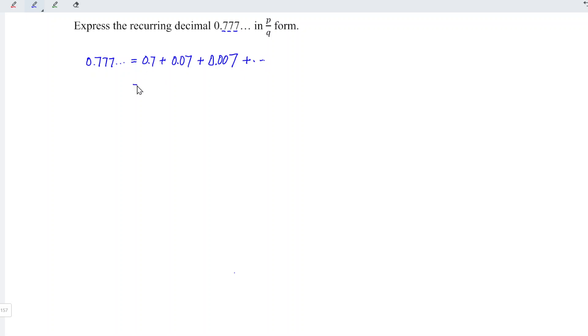We can now rewrite them as a fraction. 0.7 is simply 7 divided by 10, 0.07 is 7 divided by 100, and 0.007 is 7 divided by 1000 and so on.